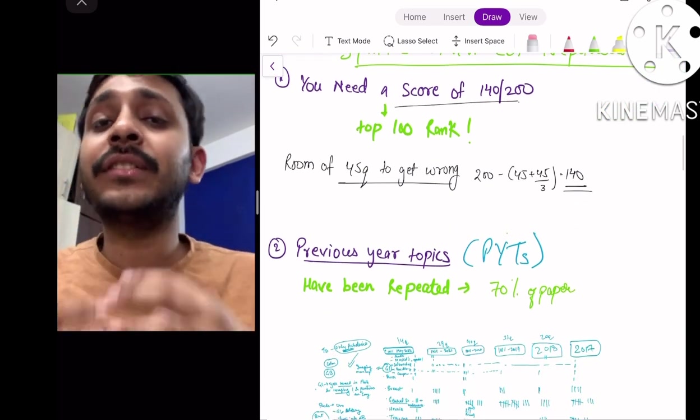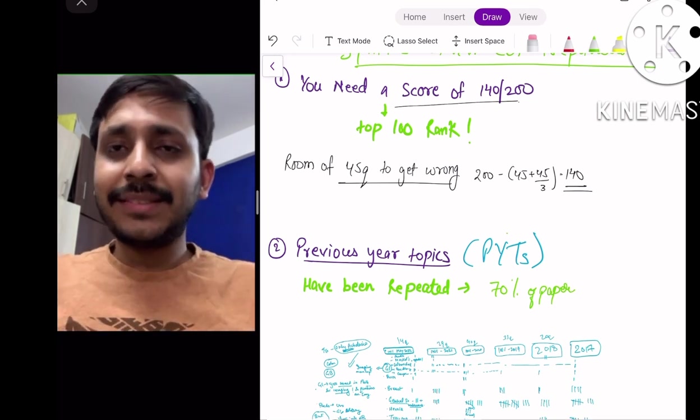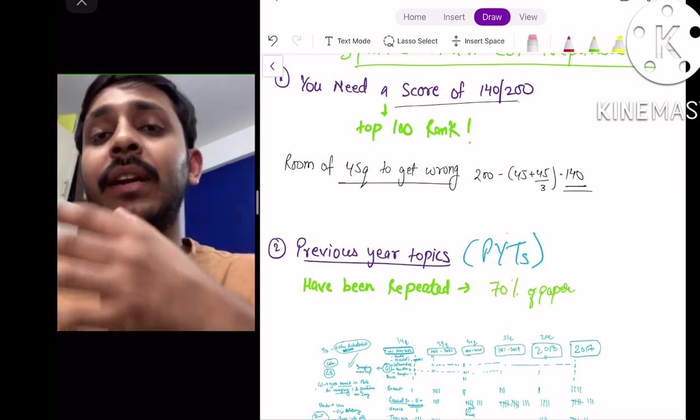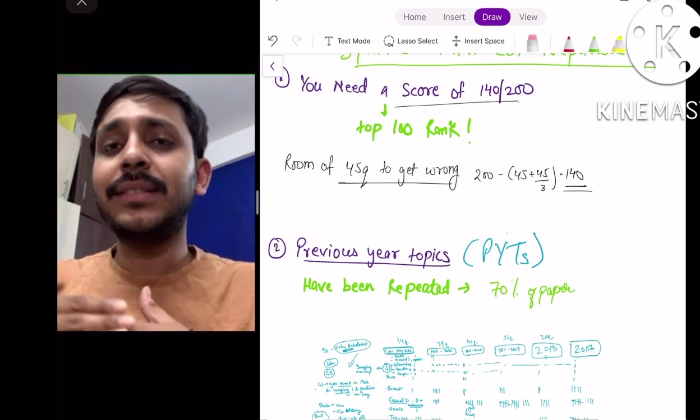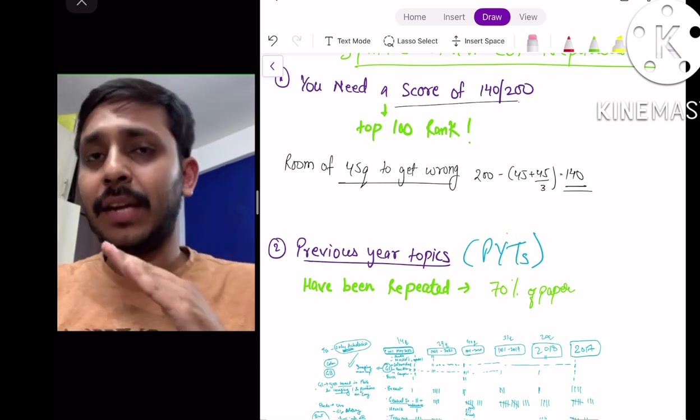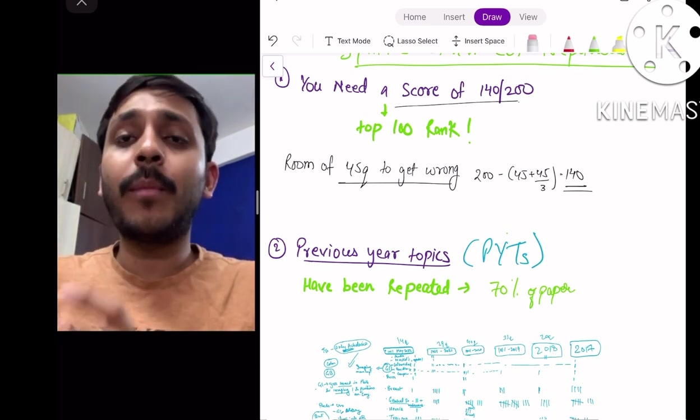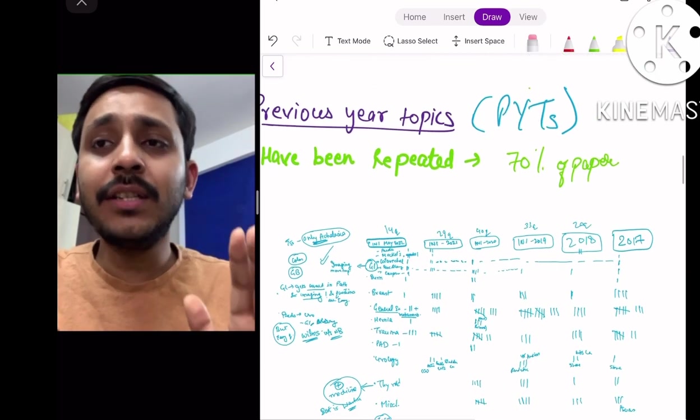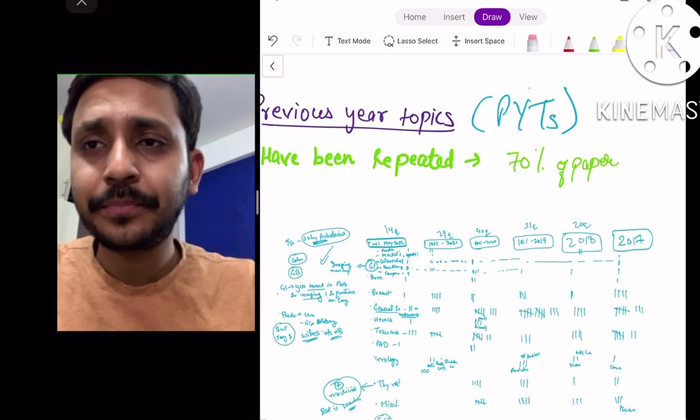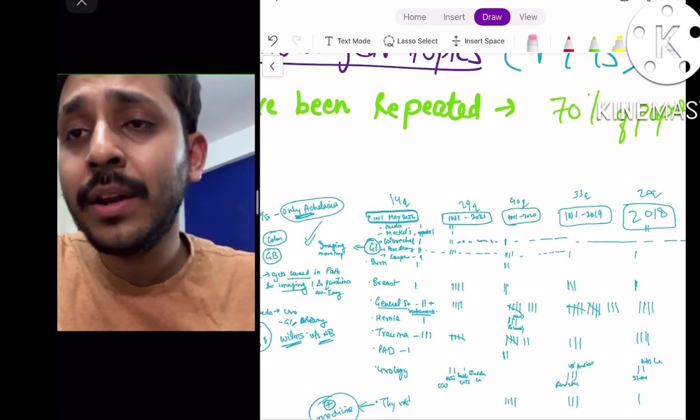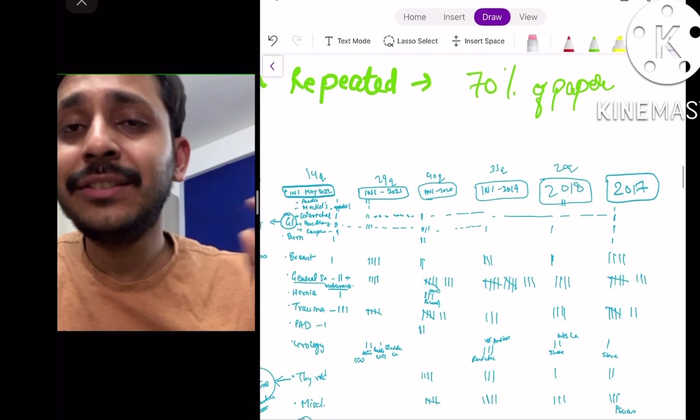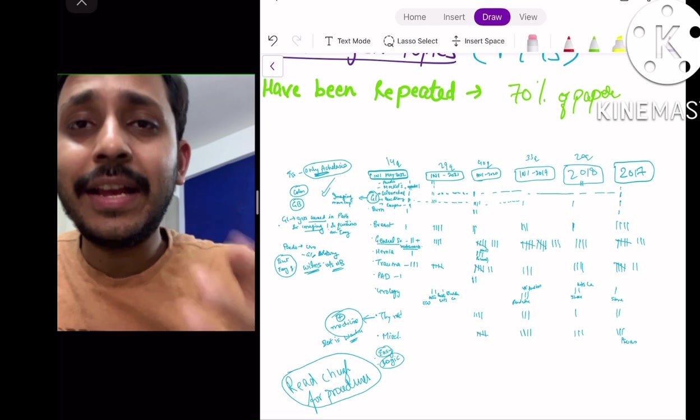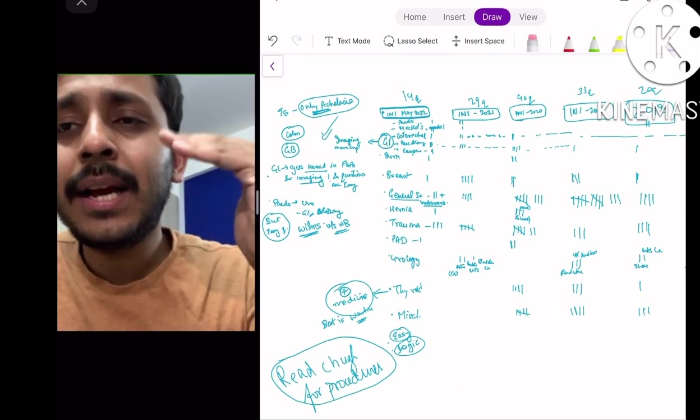The second important pillar to know is that previous year topics are repeated again and again. More than previous year questions, I believe that previous year topics are repeated, because the exact question doesn't get repeated as such. But the topic is definitely repeated, and these previous year topics form around 70% of a question paper. I analyzed the last 5 years INI-CET questions of surgery from May 2021 all the way till 2017, and I realized that in these 5 years the most important topics were repeated again and again.